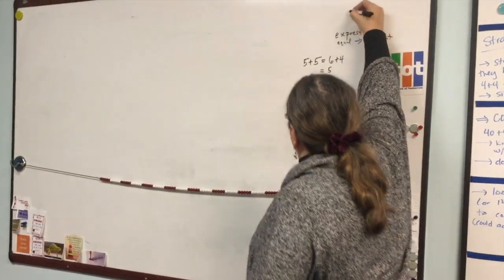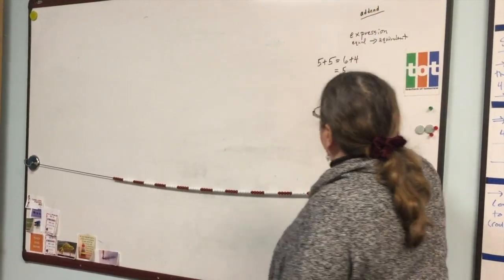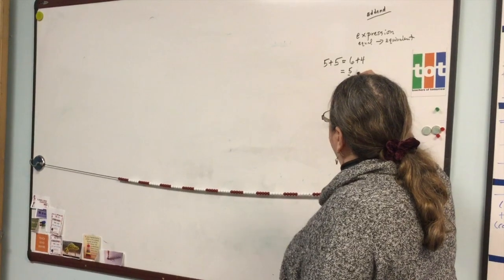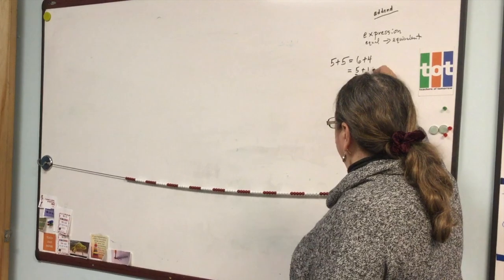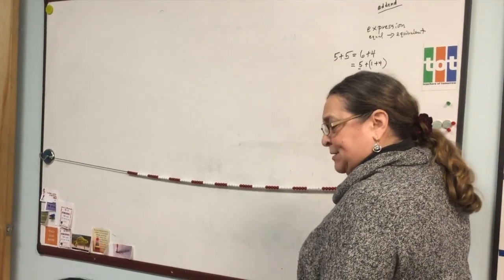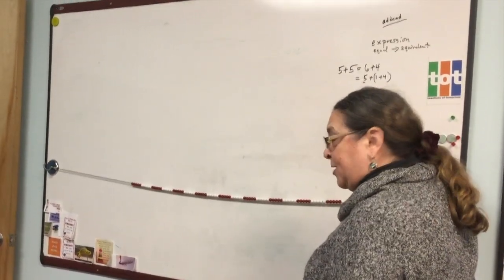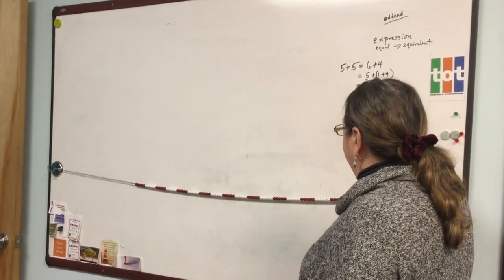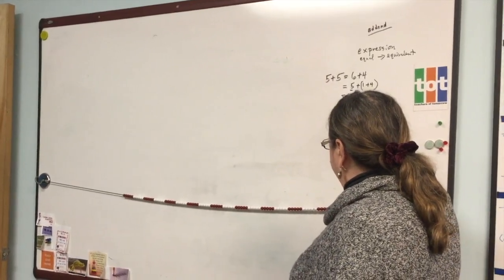And we're going to use the word addend, too, because these are addends in our expression. Addend. Addend, he kept one addend the same, and the other addend he broke into one and four. One and four is still equivalent to five? Yeah. And he took that one, and where did he give it? To the five. He gave it to the five, and now he has an equivalent expression of six plus five.